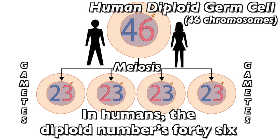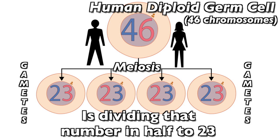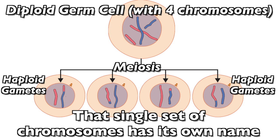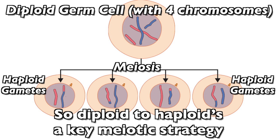In humans, the diploid number is 46, and a key trick that happens in meiosis is dividing that number in half to 23. That single set of chromosomes has its own name — it's called haploid in this meiotic game. So diploid to haploid is a key meiotic strategy.